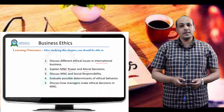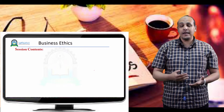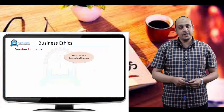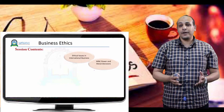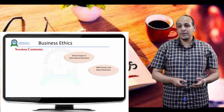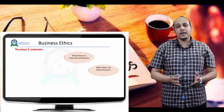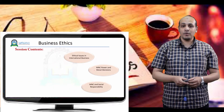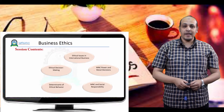So in regards to these outcomes that the students should be able to discuss freely, analyze and come up with their own point of view, we will cover the following points: first, the ethical issues in international businesses; multinational corporate power and moral decisions; these companies' social responsibilities; the determinants of ethical behavior, since these kinds of determinants may be different from one place to another according to the culture and the nature of business; and finally, ethical decision making.